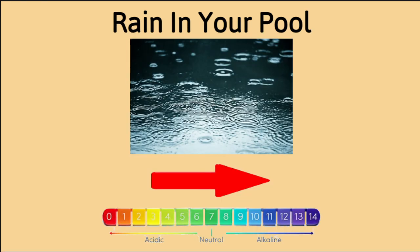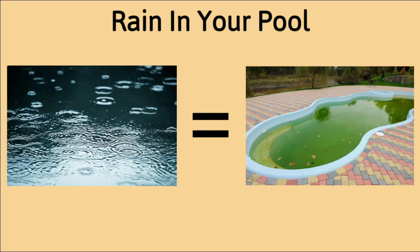Rain will also affect your water chemistry. Other than just diluting your pool's chemicals, rain is acidic due to all of the chemicals in our atmosphere and will cause your pH to drop. This change in pH can affect the chlorine's ability to sanitize your pool.